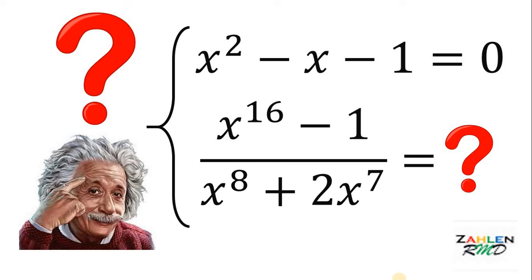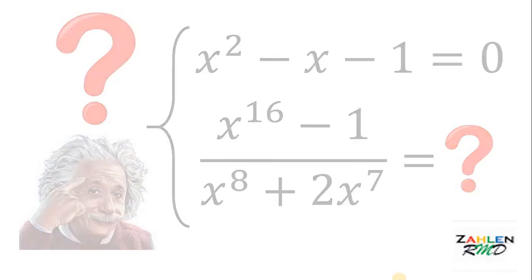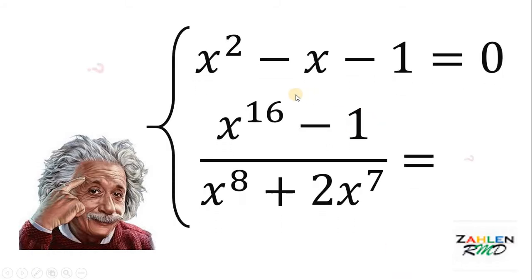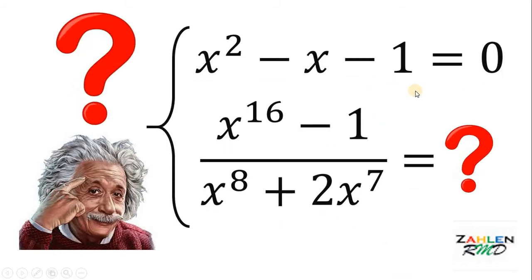Hello everyone. Let's try to answer a problem posted on Facebook. Here's the question: given the equation x squared minus x minus 1 equals 0, our goal is to find the value of x raised to 16 minus 1, all over x raised to 8 plus 2x raised to 7. If you want to answer this problem, just pause the video now. Here's the solution.